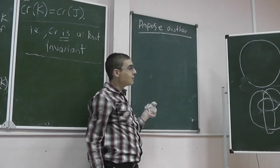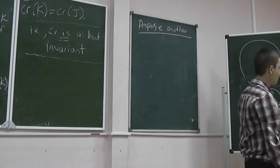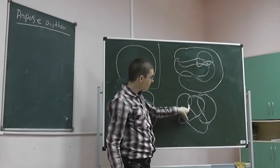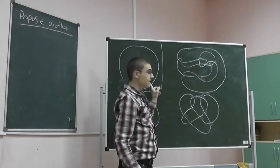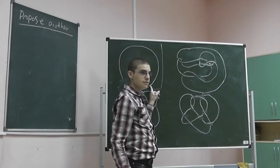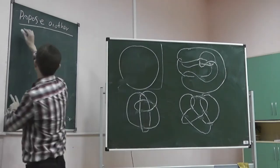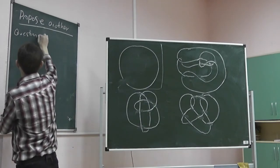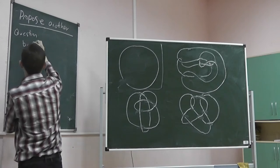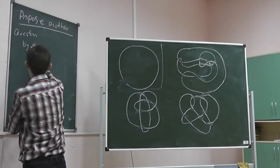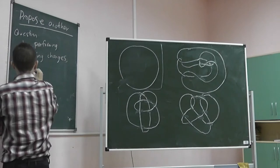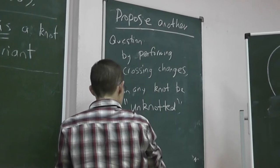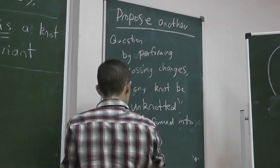Here's a question: if I start with any knot, represented by a diagram, and I change crossing, if I do that, can I get to this? Yes. So, question: by making crossing changes, can any knot be the unknot, i.e., thanks for the unknot.